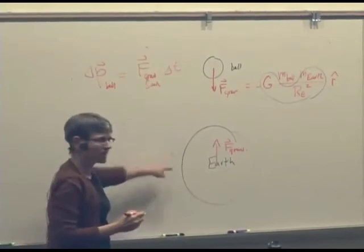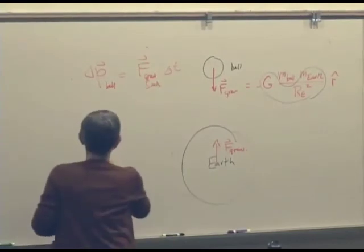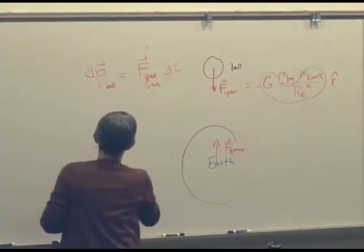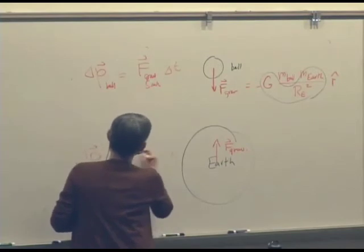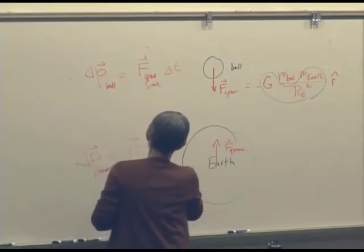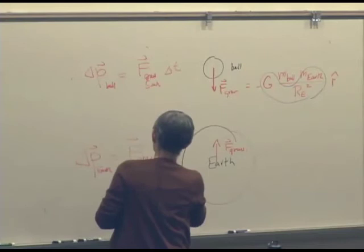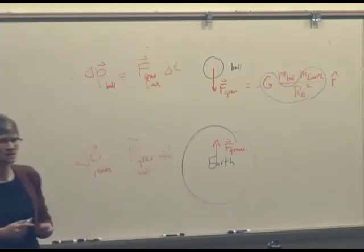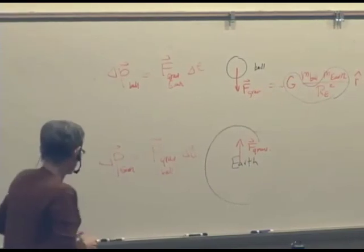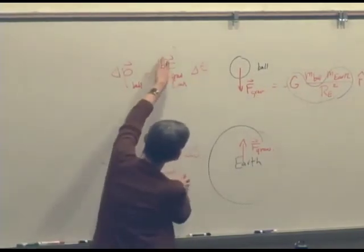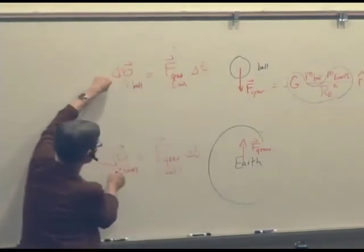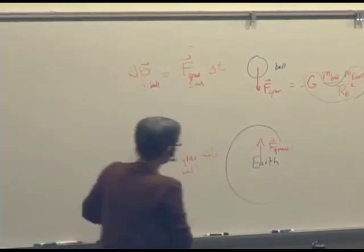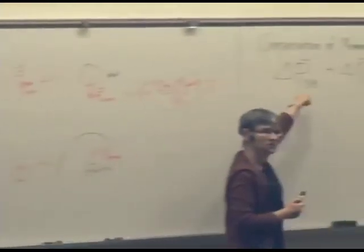We could also say that the change in the momentum of the earth is equal to f gravitational due to the ball, delta t. And we know these things are equal and opposite. So, therefore, those two things better be equal and opposite, which would make this be true, wouldn't it?